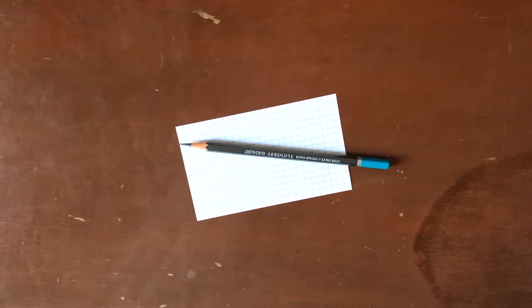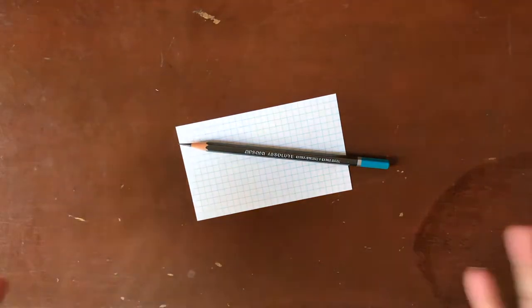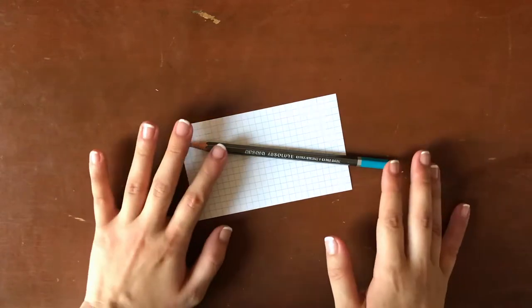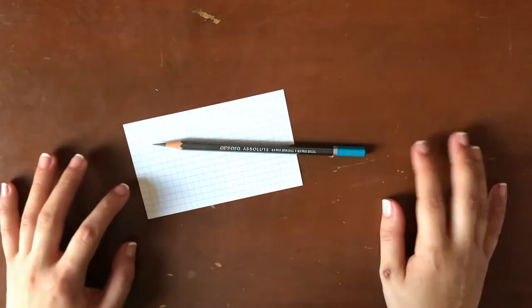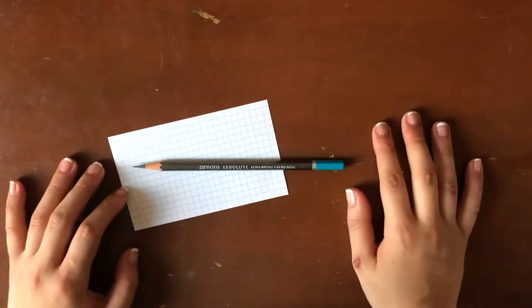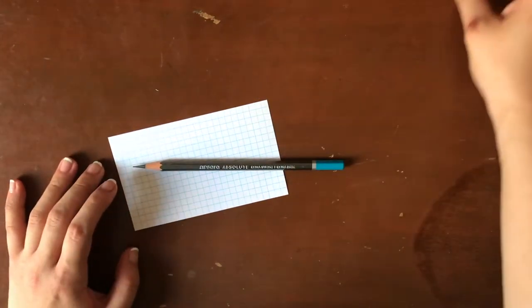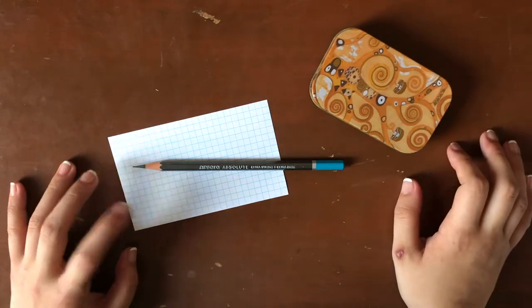And finally, I like to look for how well the pencil erases. As you can see, this Apsura does not have an attached eraser. So we're going to be using a couple handheld erasers to test the erasability, which I have in my trusty Klimt tin here.